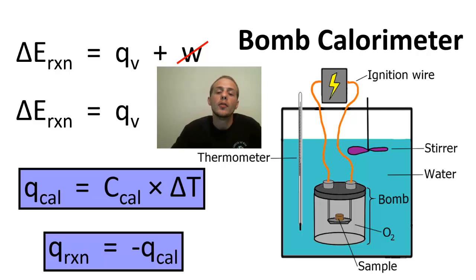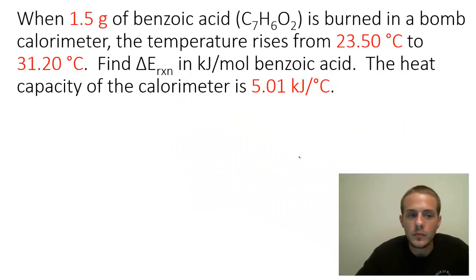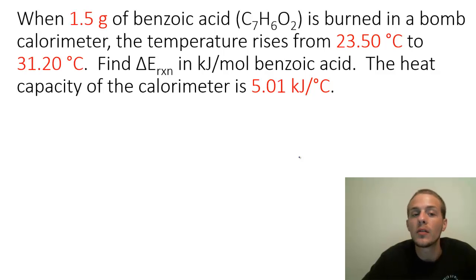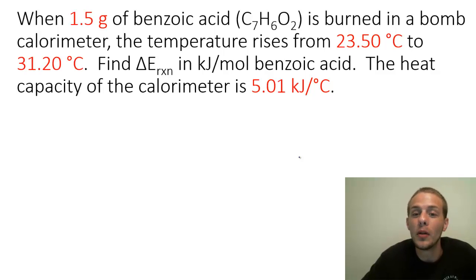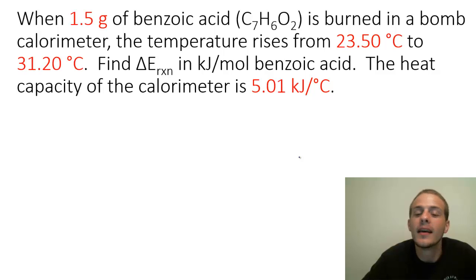Let's do a problem using constant volume calorimetry. When 1.5 grams of benzoic acid, C7H6O2, is burned in a bomb calorimeter, the temperature rises from 23.50°C to 31.20°C. We're asked to find delta E for this reaction in kilojoules per mole of benzoic acid. The heat capacity of the calorimeter, determined from a separate experiment, is 5.01 kJ/°C.